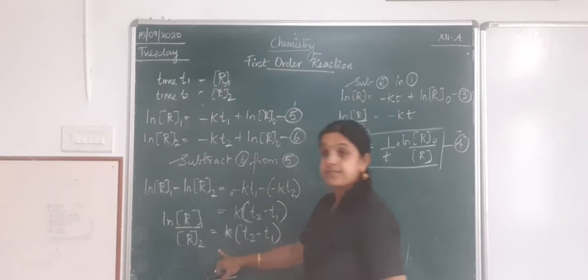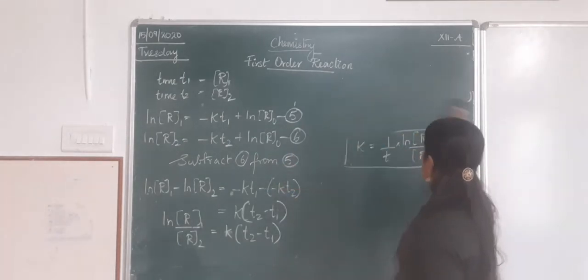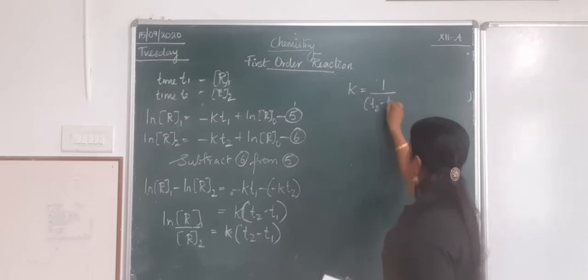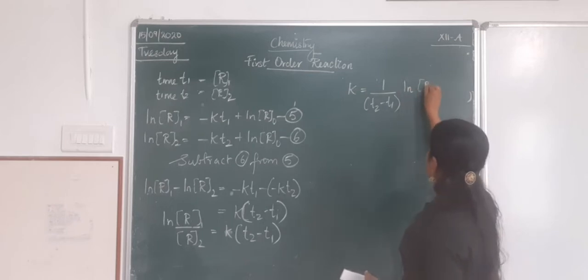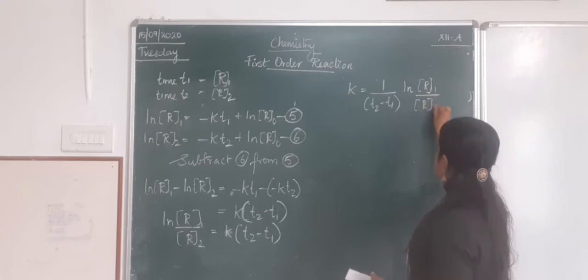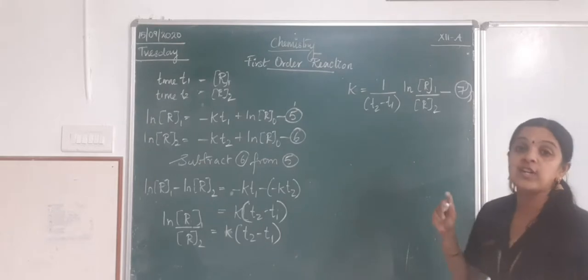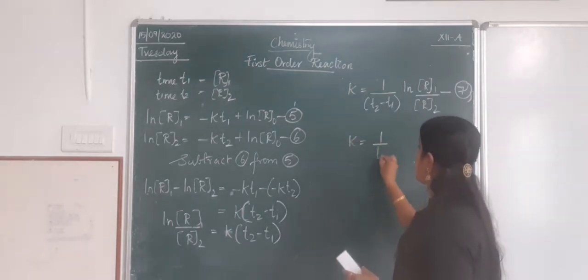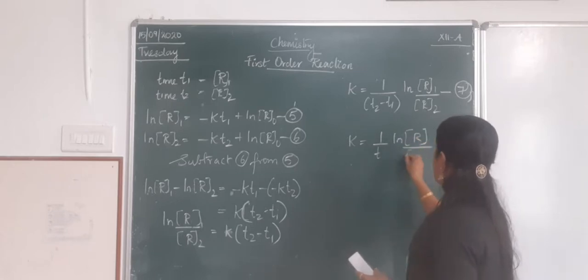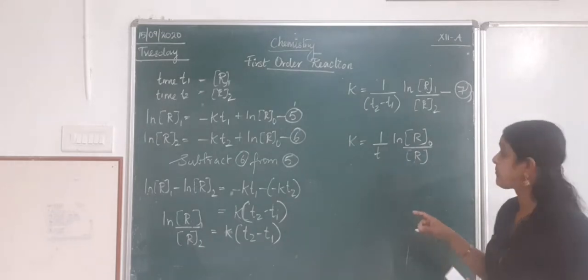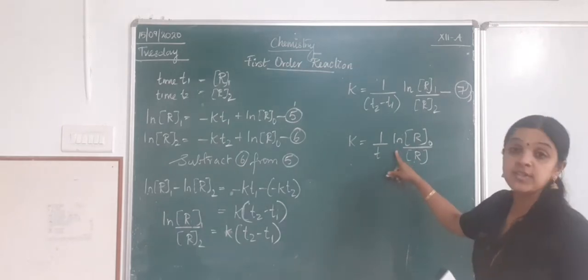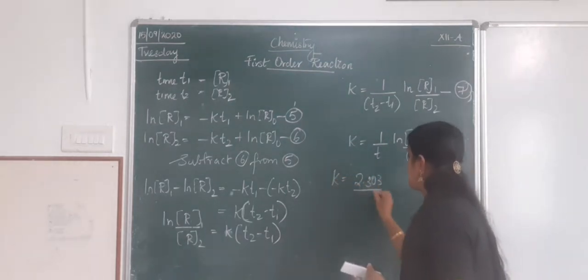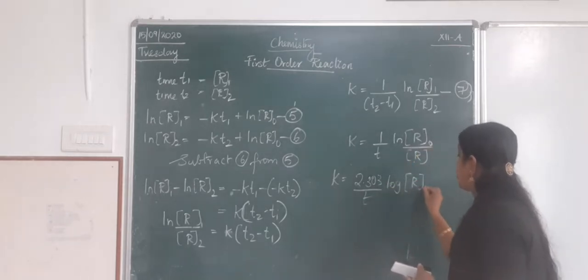From this, the value of k is: k = (1/(t₂ − t₁)) ln(R₁/R₂). This is equation 7. We also have k = (1/t) ln(R₀/R). To convert from natural logarithm, multiply by 2.303: k = (2.303/t) log(R₀/R).